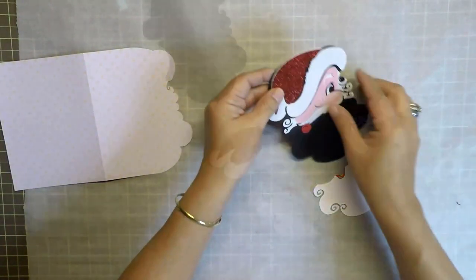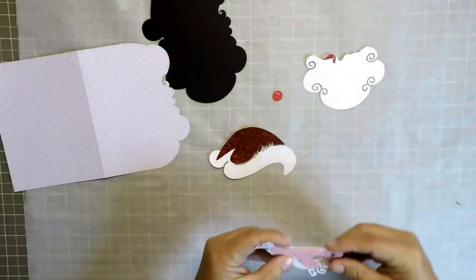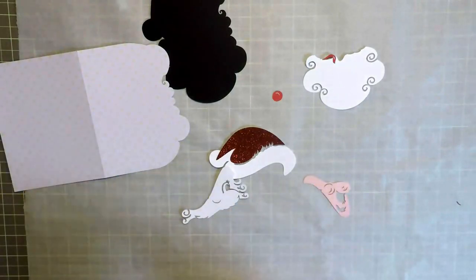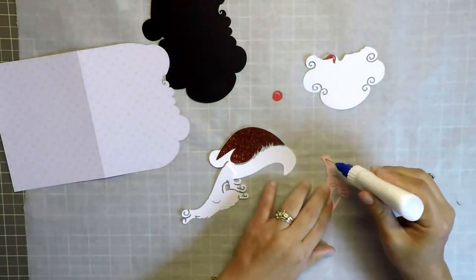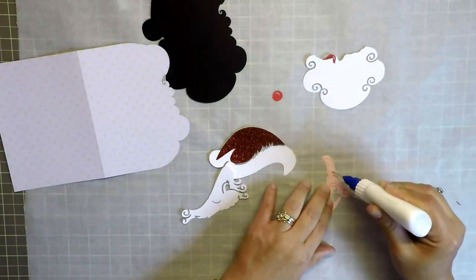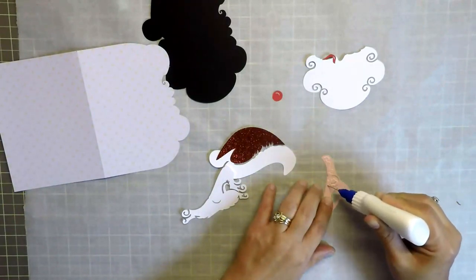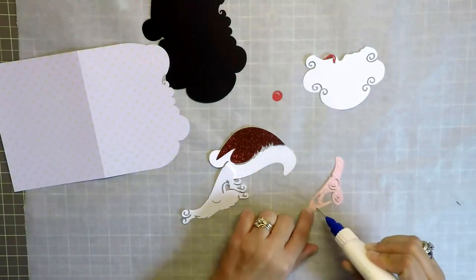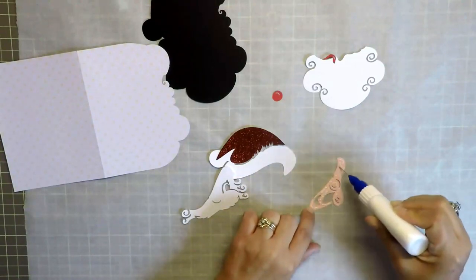Just a note here, I am going to use the Scotch Quick-Dry Adhesive Glue. I've been using it for years and years and it works really well and it dries really fast. But I have had a few of you ask me what kind of tip I'm using on my little glue bottle and what kind of glue I'm using.